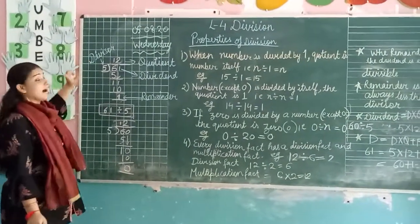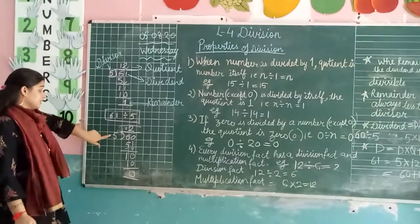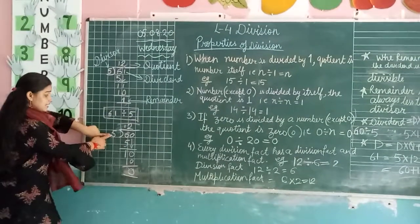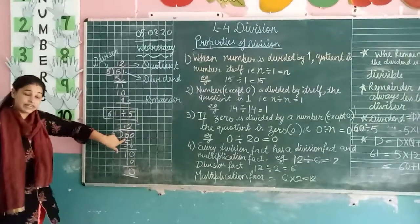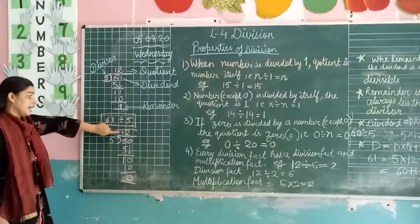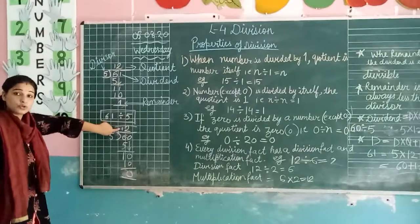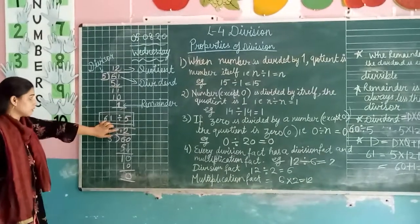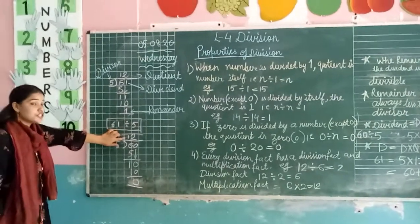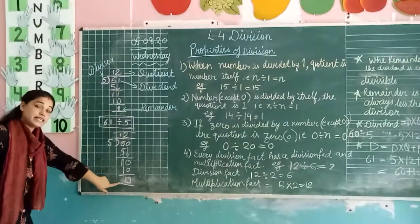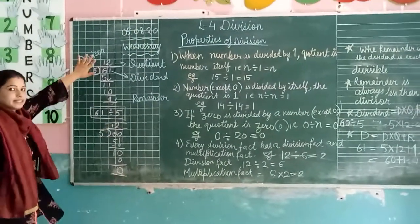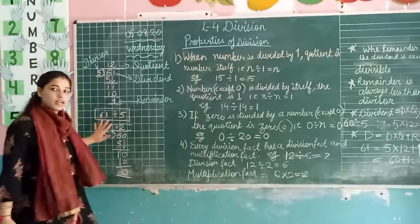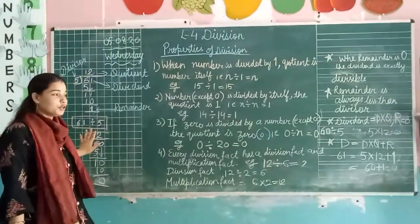So another example. This is our divisor. This is our dividend. Here is our quotient and here is the remainder. I think these terminologies are clear to you.